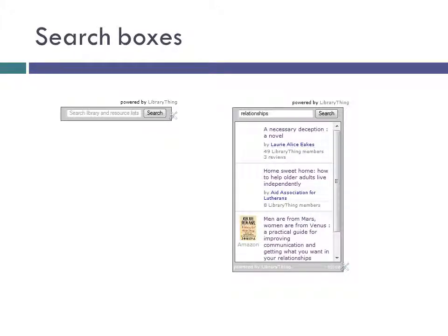One of the more recent widgets that LibraryThing has started offering is a search box. It seems to search on title, author, and at least some parts of the book descriptions, as well as on tags. It works pretty much like Google — just one box and a button.